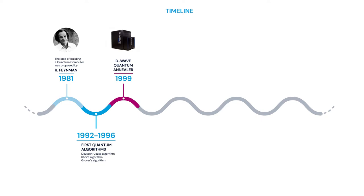D-Wave launched in 2011 the first commercial quantum computer called D-Wave-1 that runs on a 128 qubit processor. It has to be mentioned that these computers are based on quantum annealing.